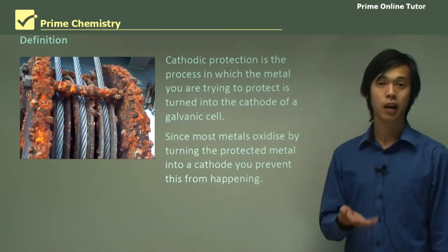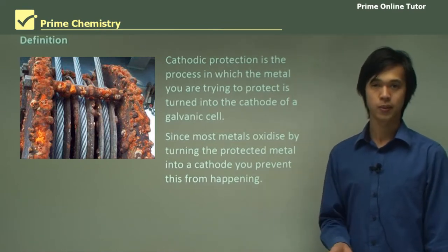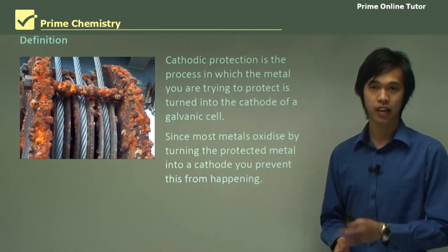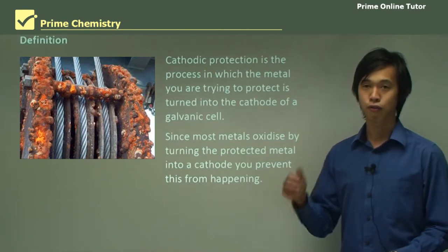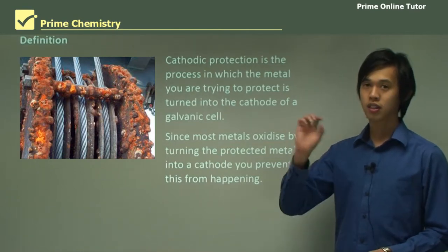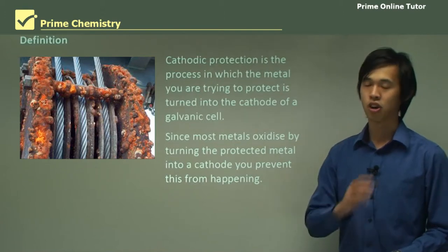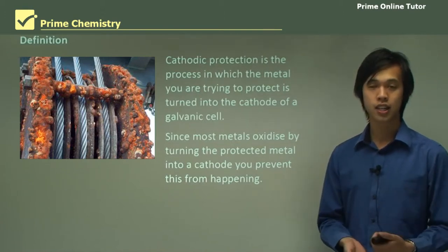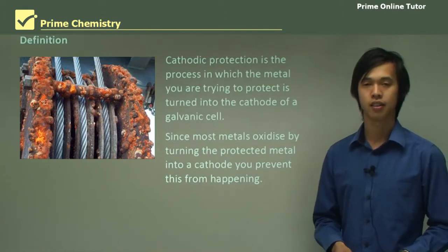Remember, what happens at the cathode? Reduction happens at the cathode. Oxidation only happens at the anode. So if we force the metal to become a cathode, there's no way that it can oxidize, because that's not what happens at a cathode.